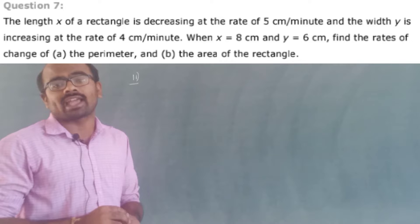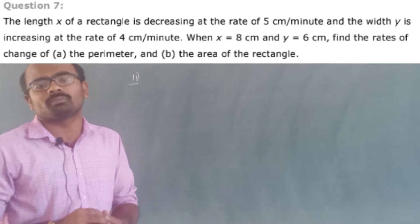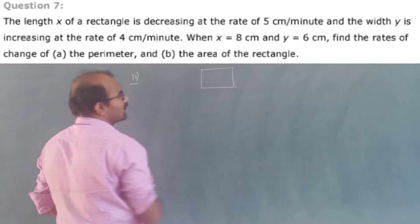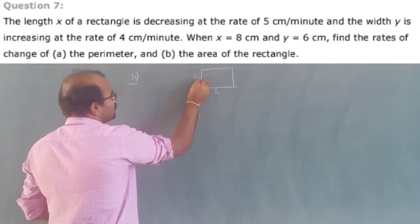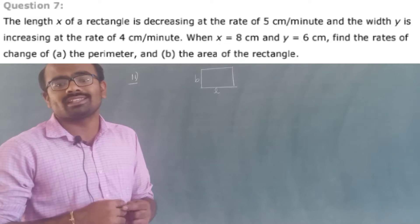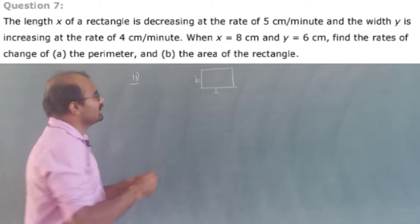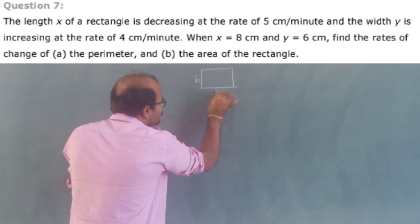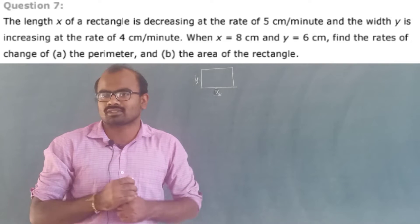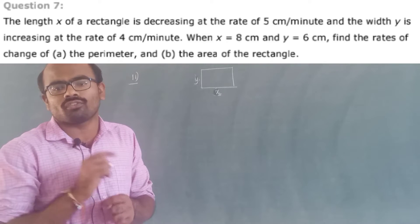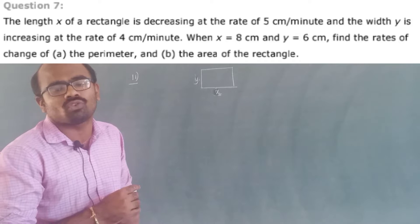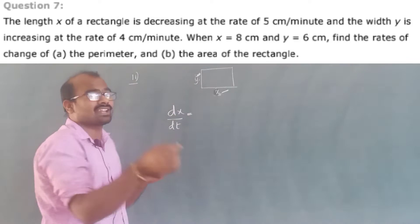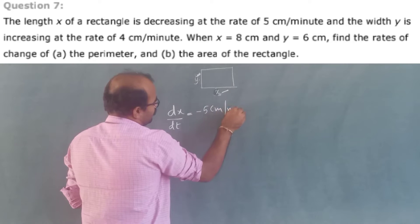The length x of a rectangle is decreasing at the rate of 5 cm per minute. So dx by dt is equal to minus 5 cm per minute — that is given.